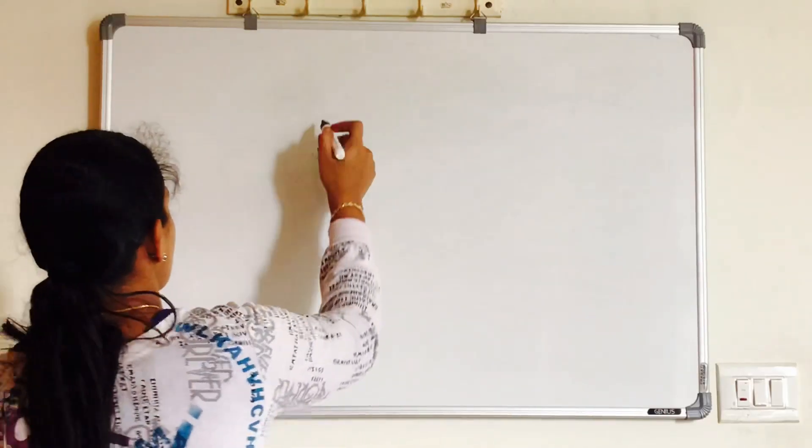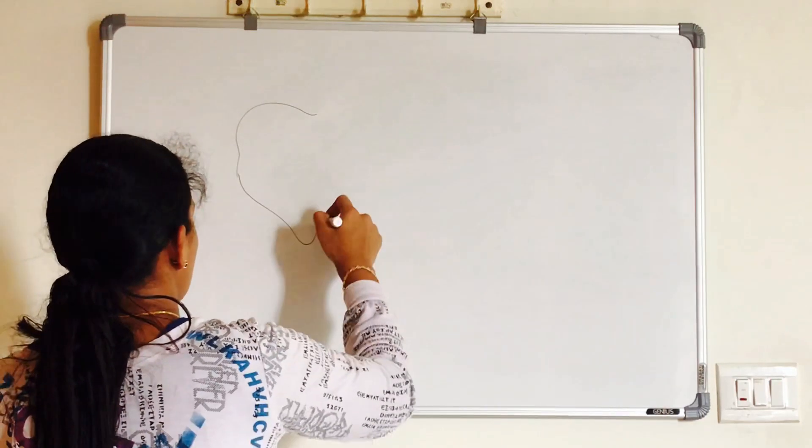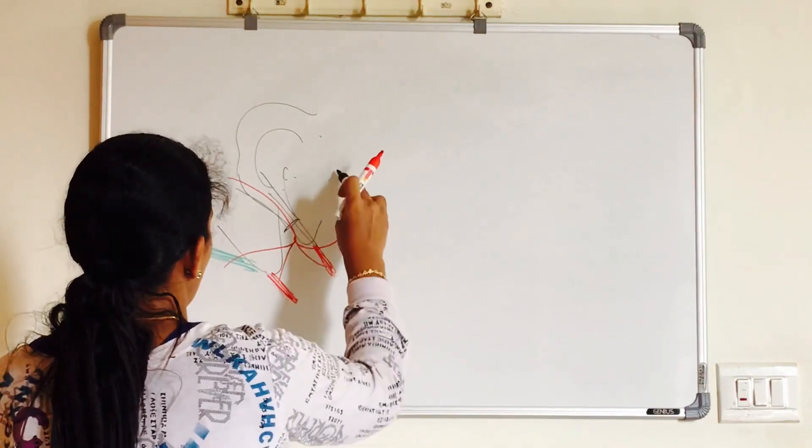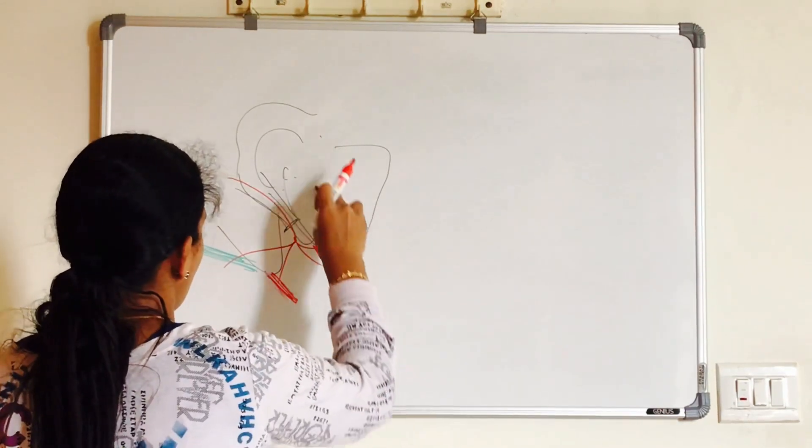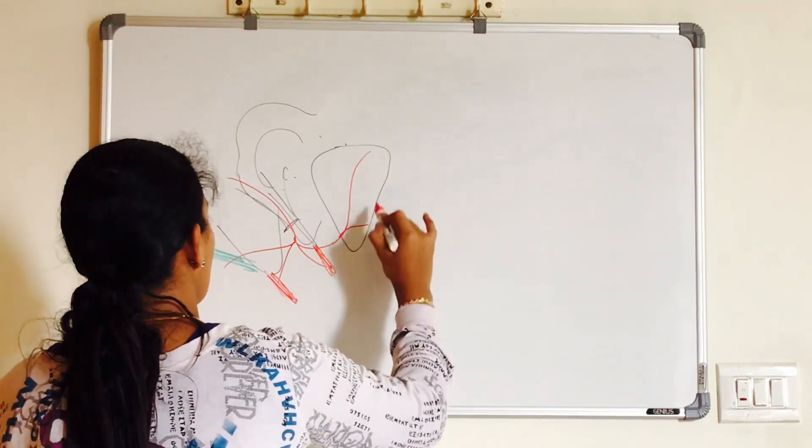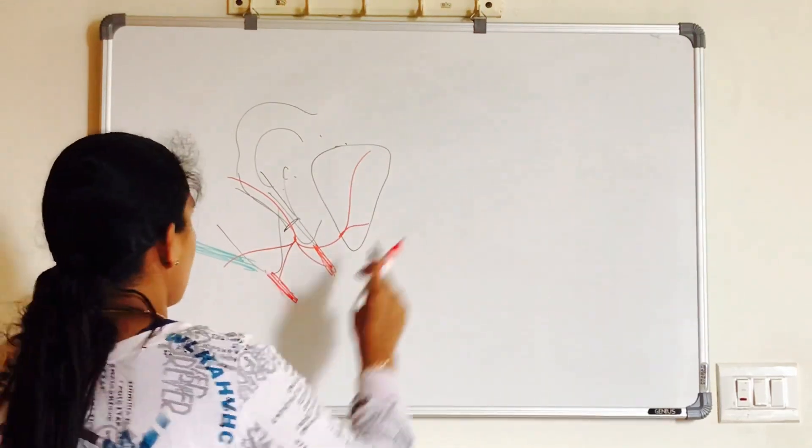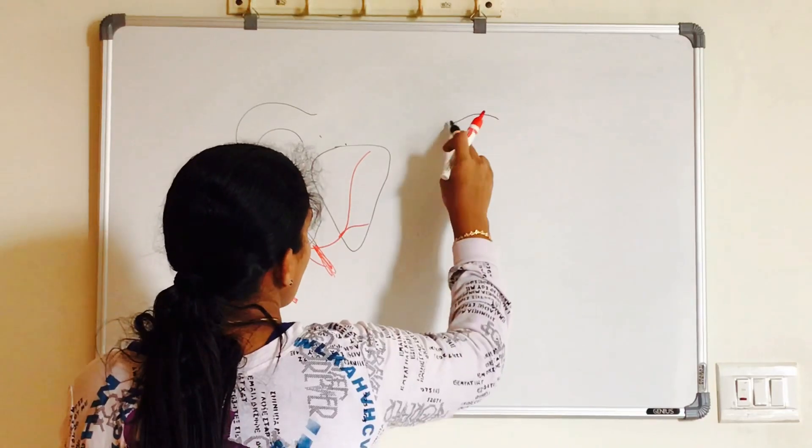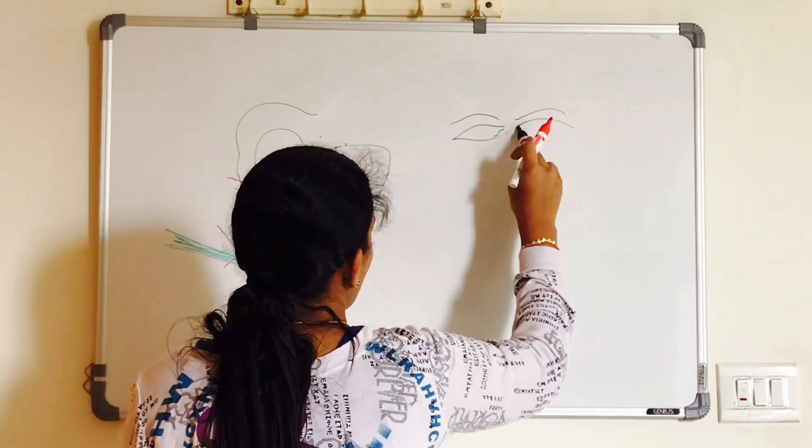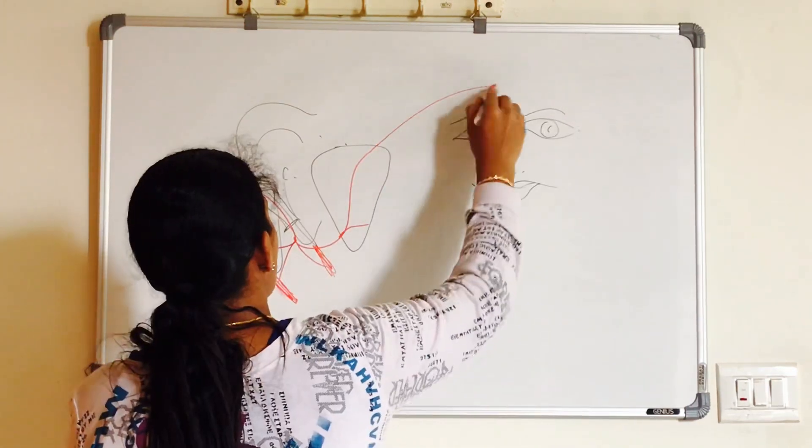Extracranial course of facial nerve. After the nerve exits from the skull, before turning forward, it supplies three muscles, posterior belly of digastric, posterior auricular muscle and stylohyoid. It enters posterior medial surface of parotid to divide into cervicofacial and temporofacial branches.